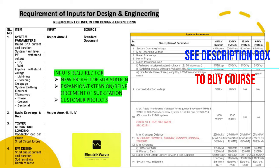First we will see Annexure 1 for system parameter requirements in detail, and Annexures 2, 3, and 4 for basic drawings preparation — covering input requirements for new projects, extension or reinforcement of projects, and customer projects.